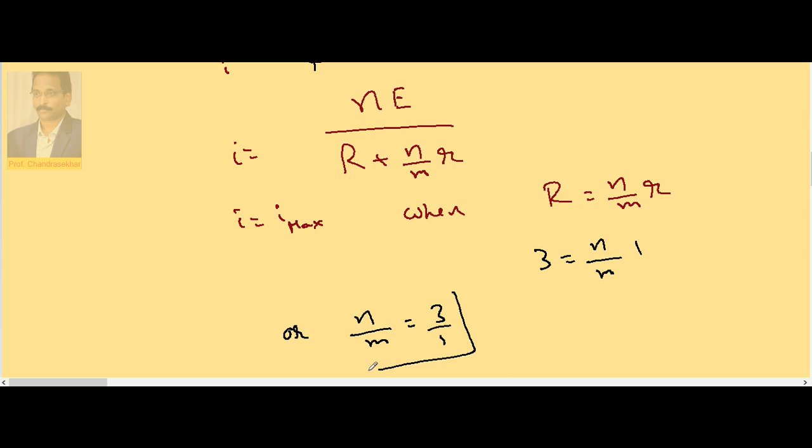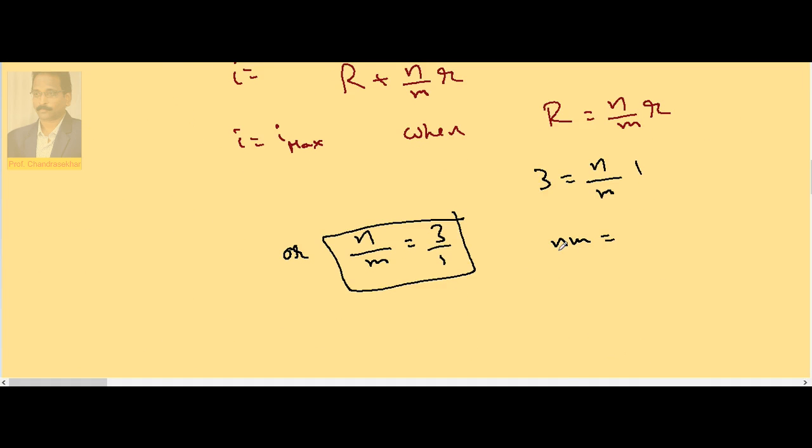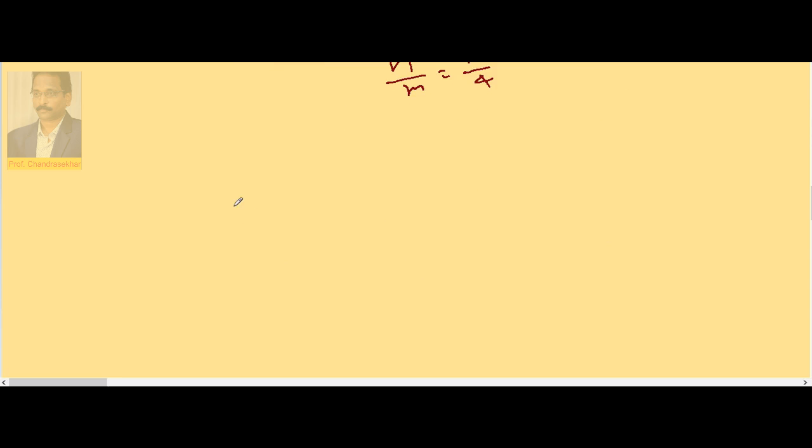And n into m is equal to the given number 48 cells. So n by m is 3 by 1 and n into m is 48. So if I take n by m as 12 by 4, 12 by 4 is 3 is to 1, and 12 times 4 is 48. That means there must be n equals 12 and m is 4. Four rows must be present and each row must contain 12 cells in series.